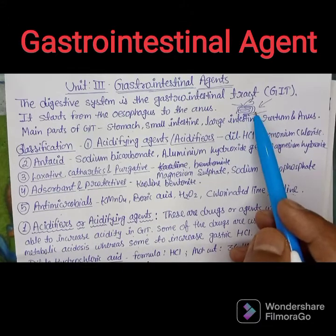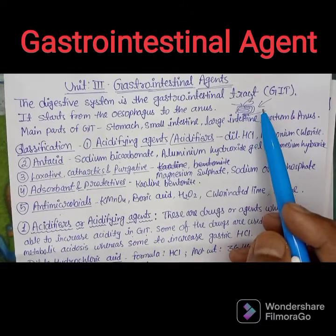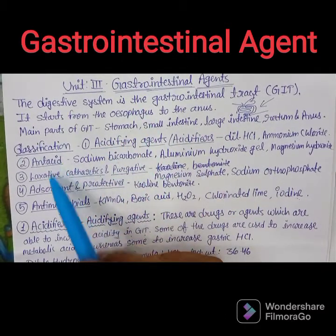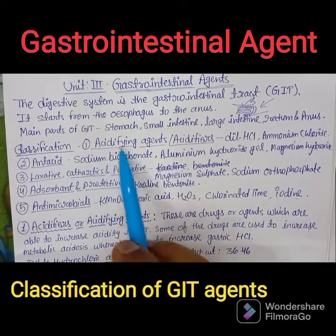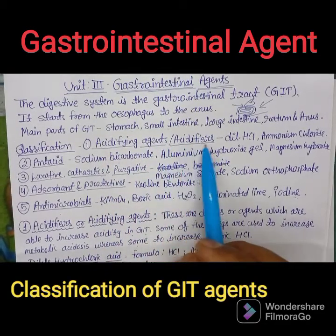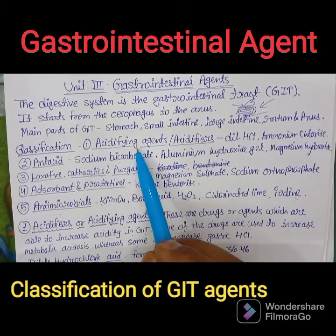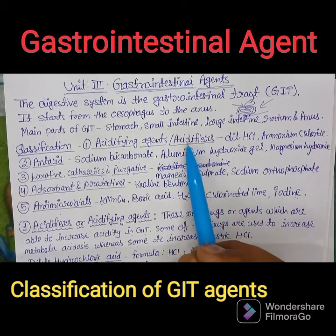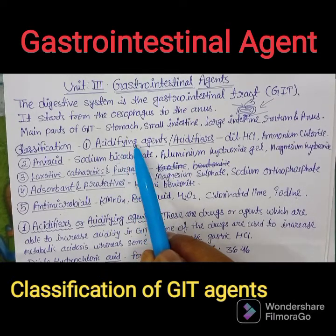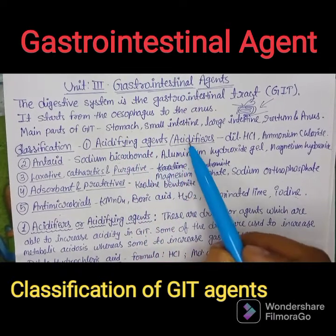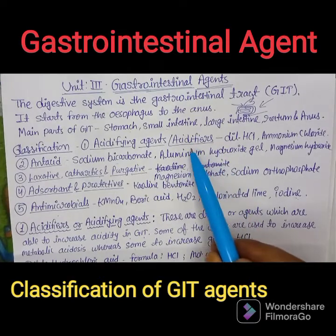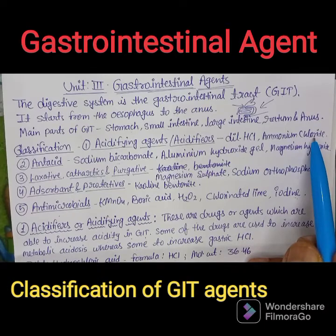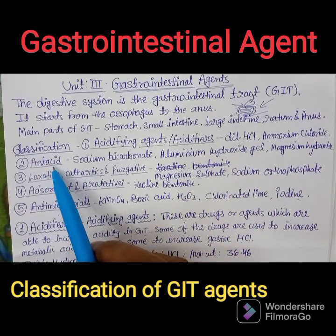These agents are chemicals that give therapeutic properties in the gastrointestinal tract, which is why we discuss them in Unit 3. The first classification of GIT agents is the acidifying agents or acidifiers — those which form or increase acid in the GIT. Examples include dilute hydrochloric acid and ammonium chloride.